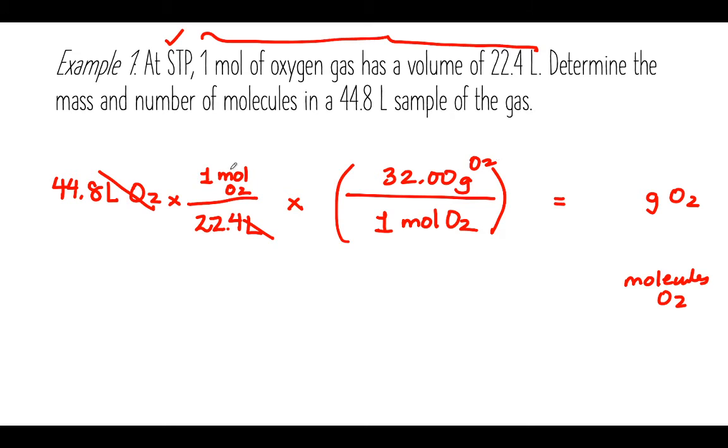Now if I type this all into a calculator, I will get 64.0 grams of O2. There are three significant digits in my question. I know that there are three significant digits in my answer. Now I found out the first part, so I figured out the mass of 44.8 liters of this gas.